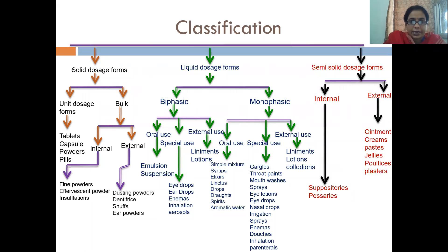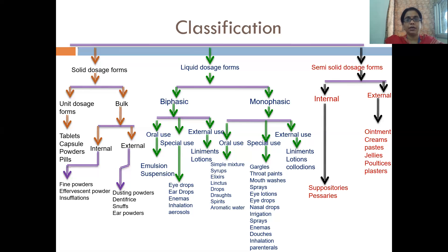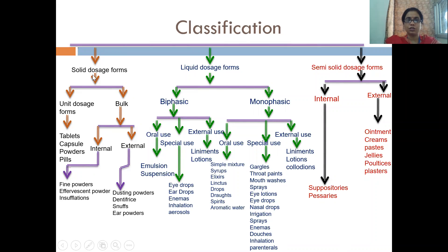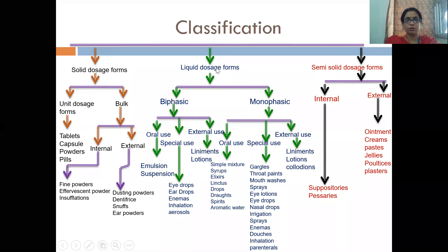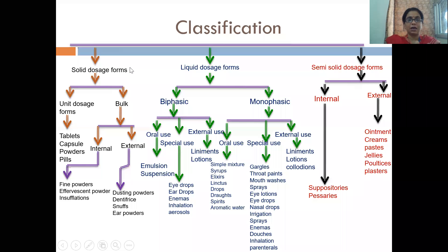This is our brief classification. We have talked about what is a drug, what is a dosage form, and why we need to make a dosage form. Our chapter is dosage forms. Now we are talking about dosage forms — we have classified them into three categories: first is solid dosage form, second is liquid dosage form, and third is semi-solid dosage form. Let us discuss them one by one.